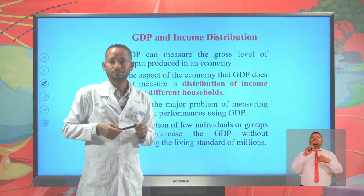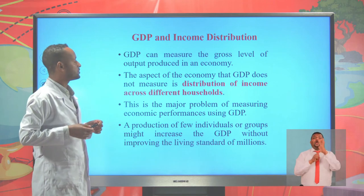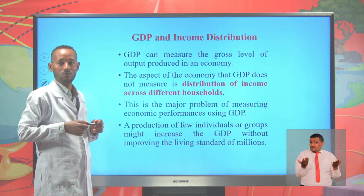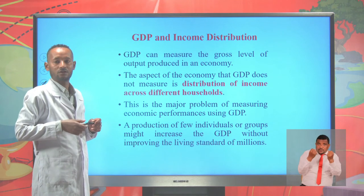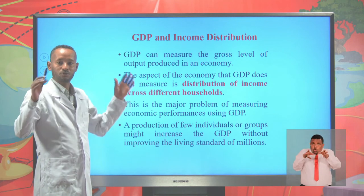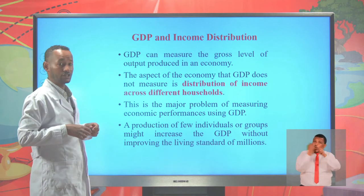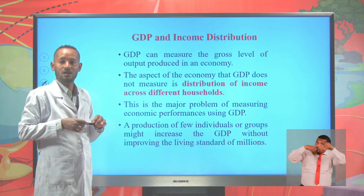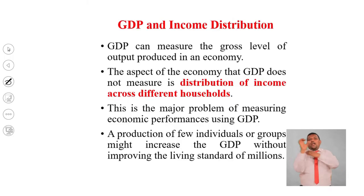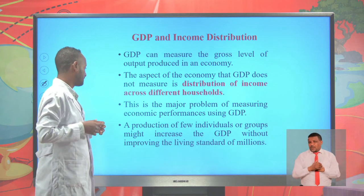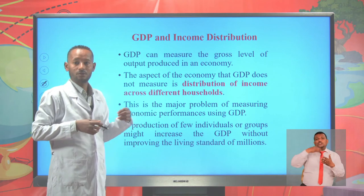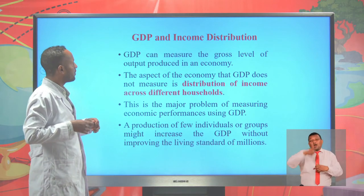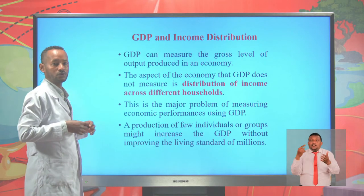Now let's see GDP and income distribution. GDP can measure the gross level of outputs produced in an economy, but it does not measure the distribution of income across different households — we don't know the share of income among the society. This is a major problem of measuring economic performance using GDP, because the production of a few individuals or groups might increase GDP without improving the living standard of millions.